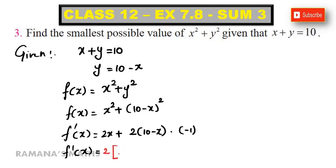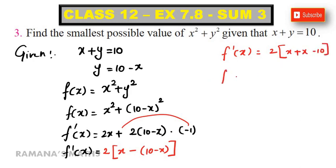2 times 10 minus x into minus 1. f dash of x is equal to 2 times x plus x minus 10. f dash of x is equal to 2 times 2x minus 10.